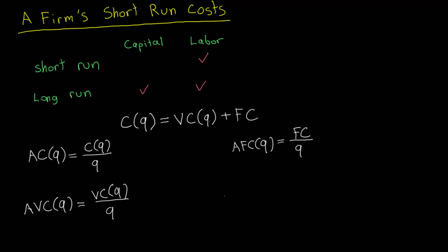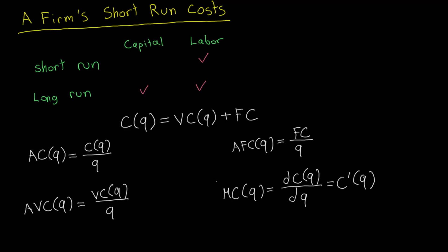The last cost function is not an average cost — it is the marginal cost. It is the derivative of the cost function with respect to the quantity of output produced by the firm. You can interpret this as: as the firm increases its output by some small amount, the marginal cost tells you how much additional cost the firm incurs from that increase in production.